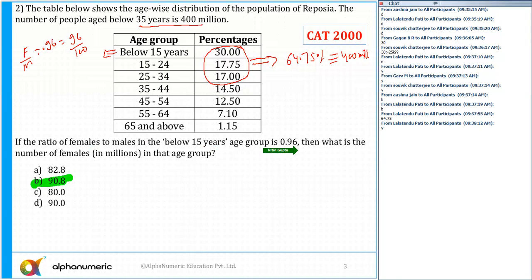So female plus male, the total of 96 plus 100 is 196. If the total number is 196, the number of females in that age group is 96. We know the total population in this particular age group...